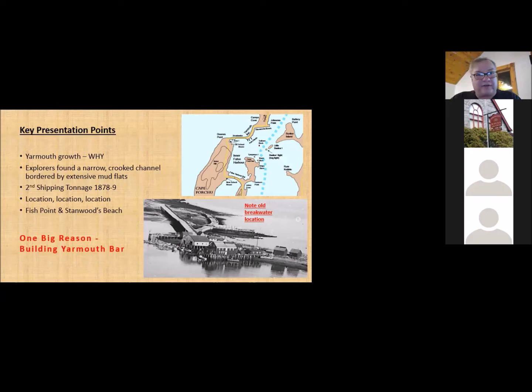The early explorers described it as a narrow, crooked channel with extensive mudflats. But despite that, we became the second largest port in all of Canada for registered shipping tonnage in 1878-1879. The reason was mainly our location, because we were the most suitable harbor on the southwestern part of Nova Scotia for ships to find shelter. We were close to some really good fishing grounds, and early on, a lot of what we were doing was trading with New England.